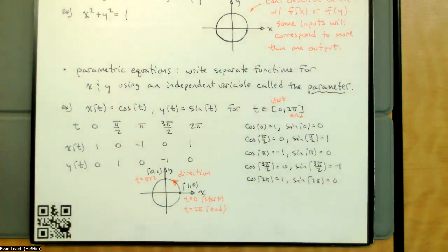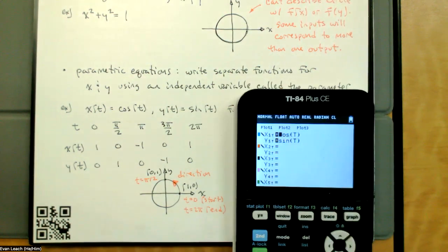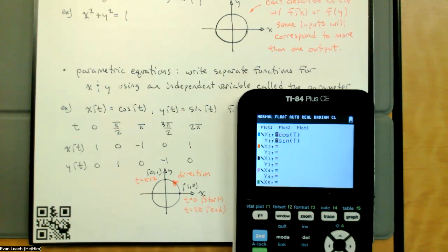The advantage here is that we can define x and y coordinates independently of each other. We had two functions: x is a function of t, and y is a function of t. We don't have to have the restriction of y being a function of x or x being a function of y. Each t corresponds to one x, and each t corresponds to one y.